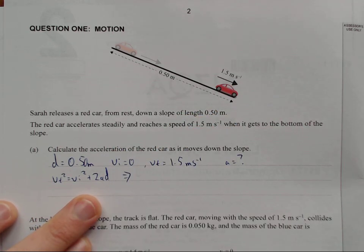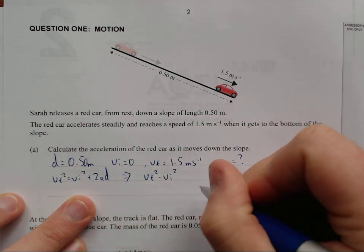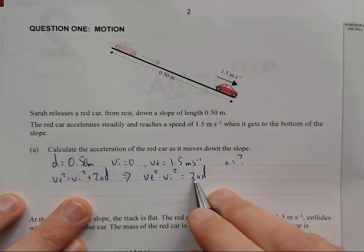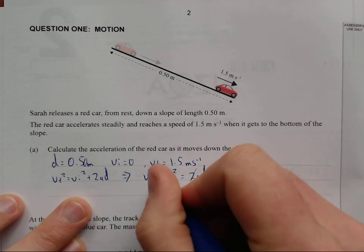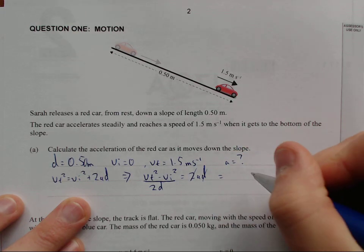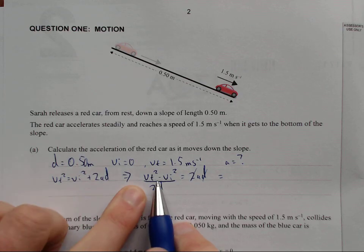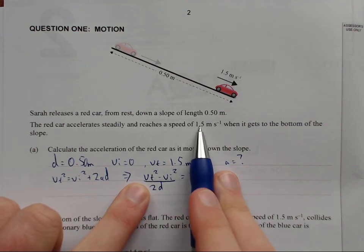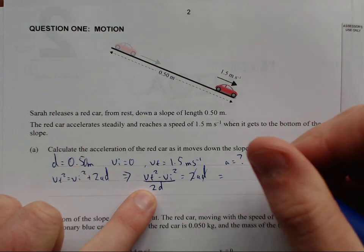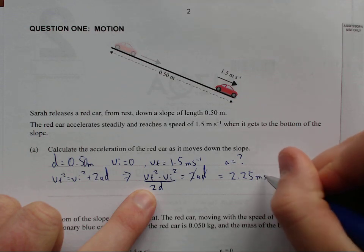All we need to do now is rearrange for the acceleration. VF squared minus VI squared equals 2AD. Now I'm gonna divide both sides by 2D. VF squared is 1.5 squared divided by 2 meters which is equal to 2.25 meters per second squared.